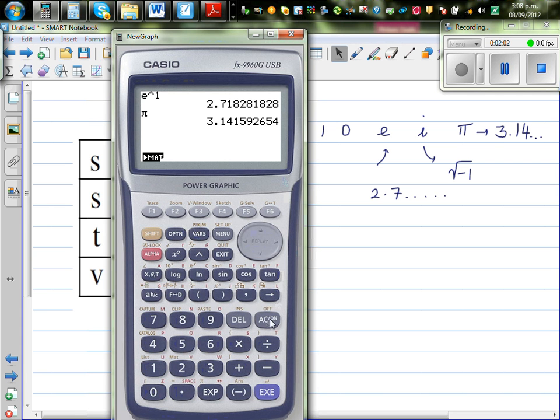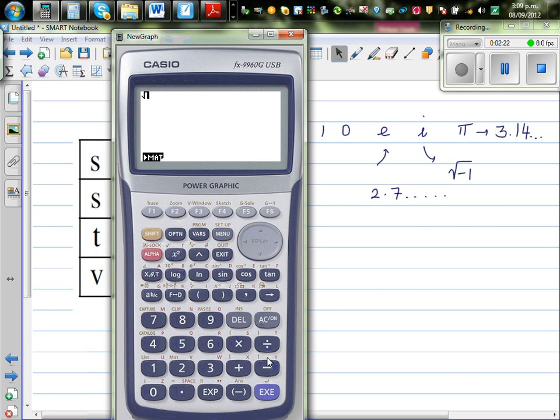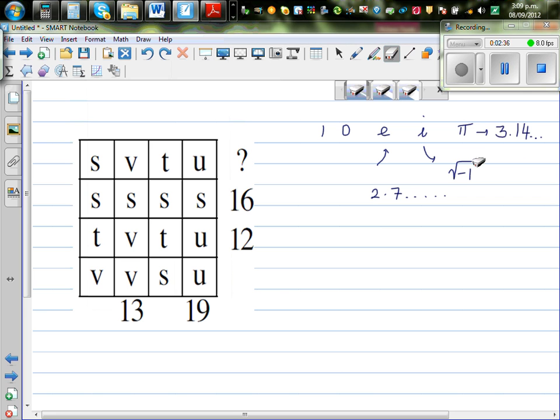And on this calculator, if you go shift square root of negative 1, you have to change the setting. So let me change the setting. I need to change this into A plus B, I form. And if you go shift square root of negative 1 is i. Can you see this letter? This is an i, which is an imaginary number. So those who haven't learned maths beyond year 12 would struggle to understand what I was trying to explain.